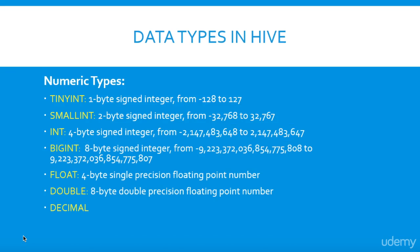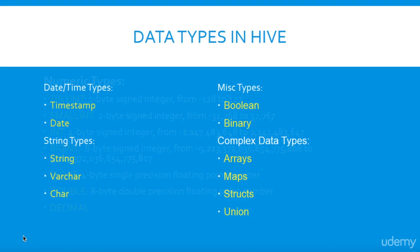Hive primitive column types are integers, floating point numbers, generic strings, and date times. Hive also supports arrays and maps.